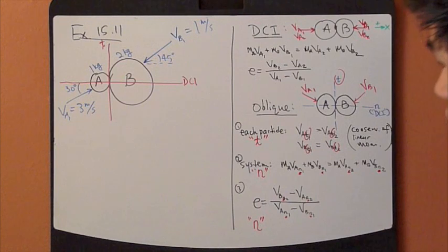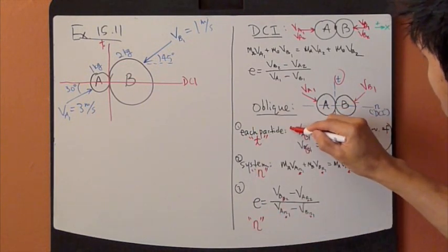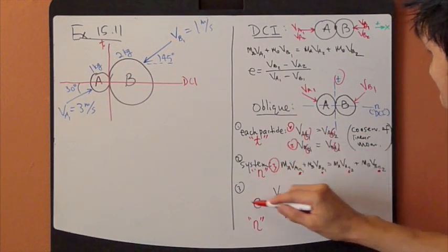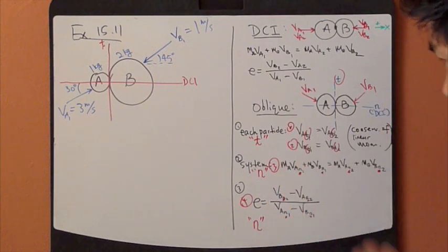So for oblique impact, really, you have one, two, three, and four equations available.